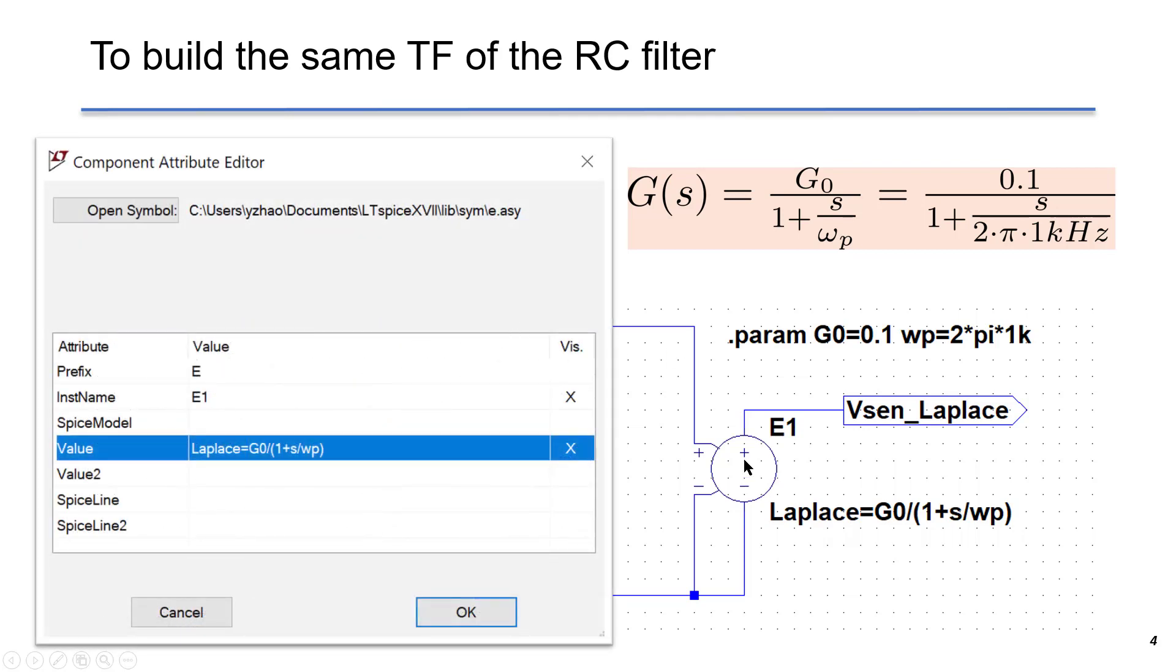If we right-click over E1, we can see the Laplace equation. We put it as value here. Laplace equals to G0 slash 1 plus S slash Omega P. This is exactly the equation here.